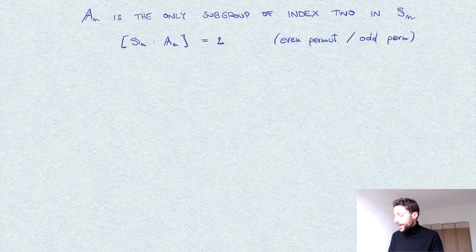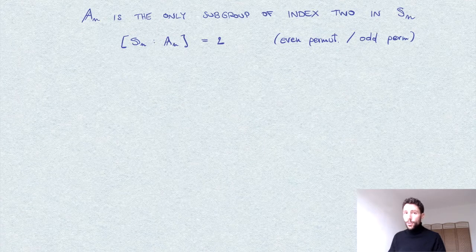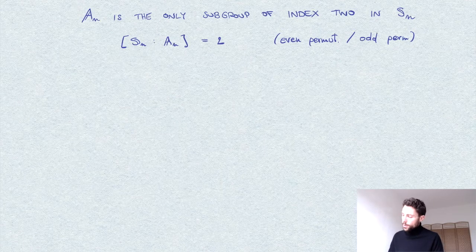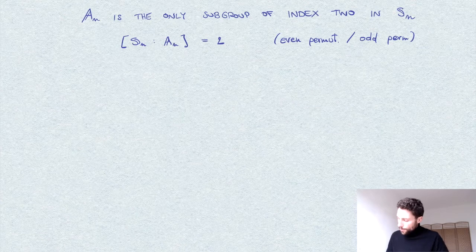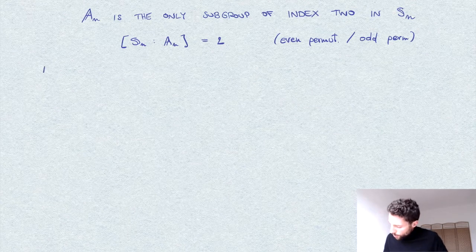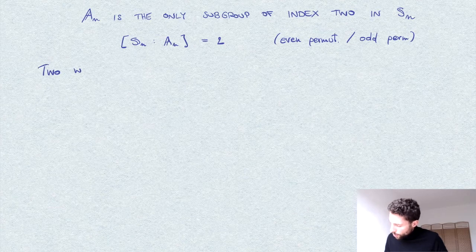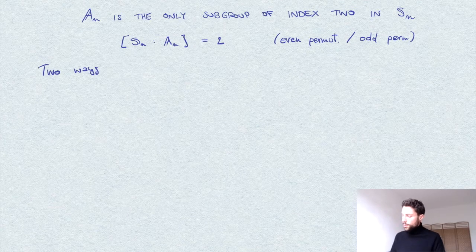Okay, A_n is index two, and as I said I want to give two proofs of the fact that there are no other subgroups of index two. So I want to show this in two ways.